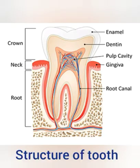Our next topic is the structure of a tooth. A single tooth has three major layers. First is the enamel, second is the dentine, and third is the pulp cavity. Enamel is the outermost white covering over a tooth.